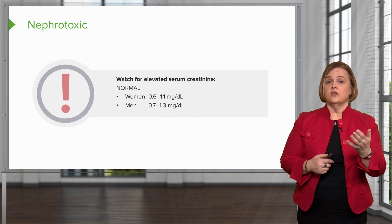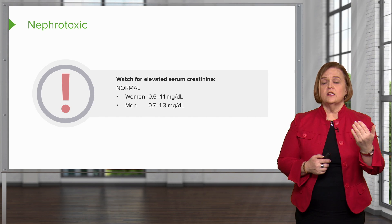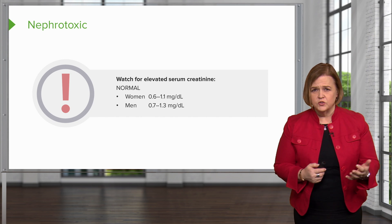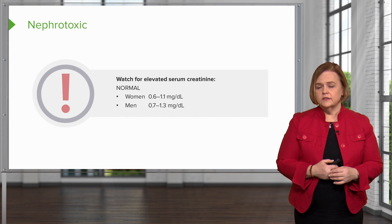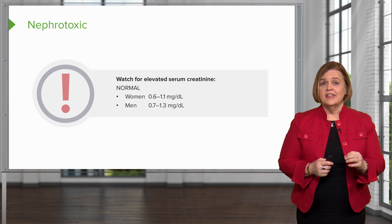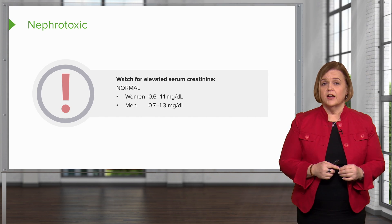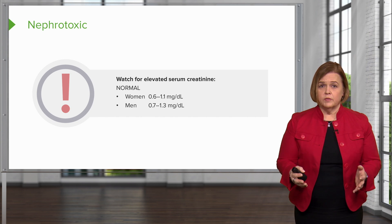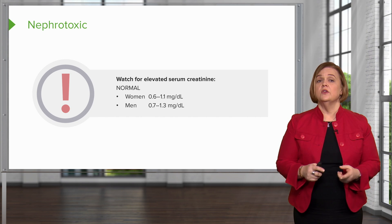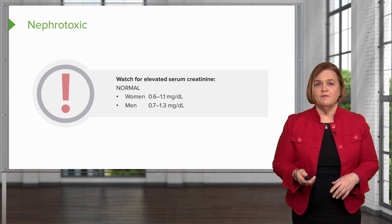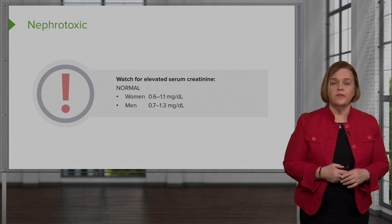For kidney function, you're going to look at creatinine level and also the BUN. Normal BUN is 7 to 20 milligrams per deciliter. If it is elevated — greater than 20 — that tells us the kidneys are in trouble and having problems. You want to draw this lab work before the medication is given, during administration, and afterwards to check that kidney function is doing well.